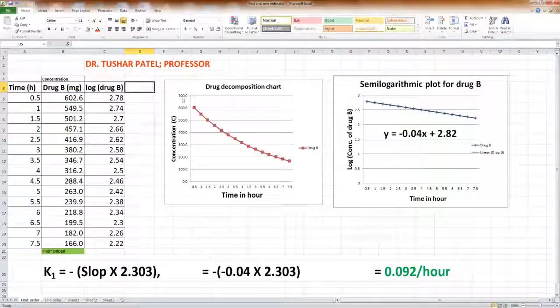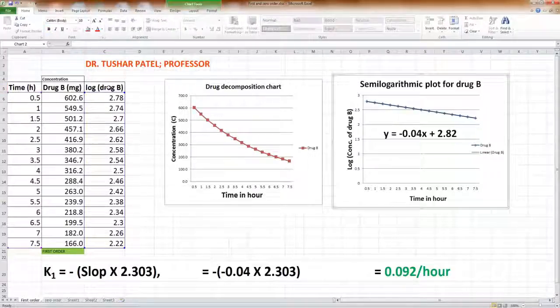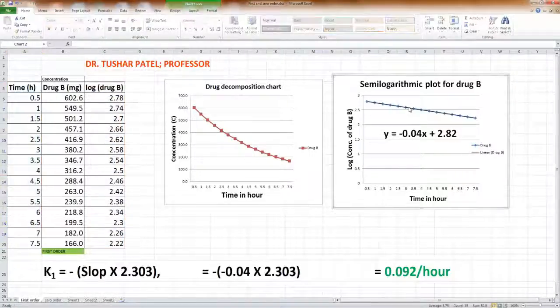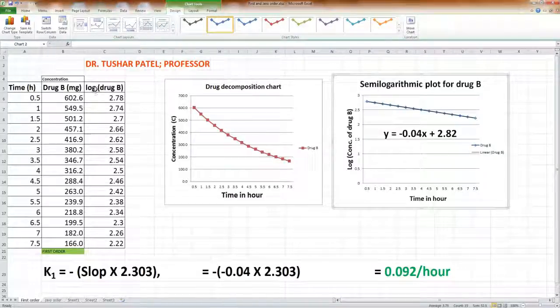After that, you draw the graph of the log concentration versus time and you will get a straight line. So how to convert the data of the concentration into log form?